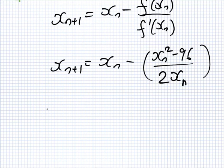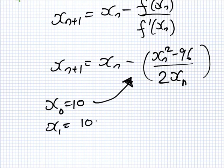We start with x₀ equals 10, and then we put 10 in here to get the next value. That would be 10 minus 100 minus 96 over 20. That's 10 minus 4 over 20, which is 10 minus 1 over 5, which is 49 over 5.